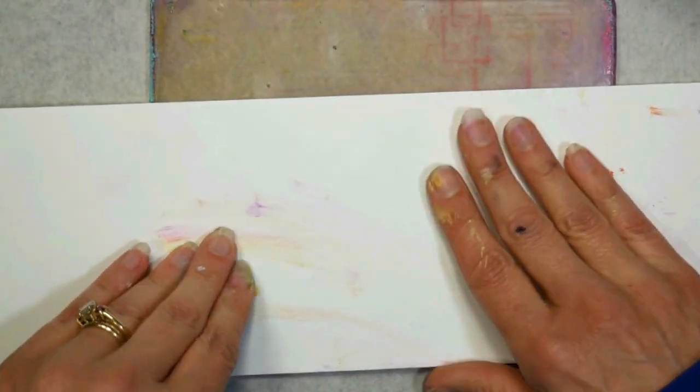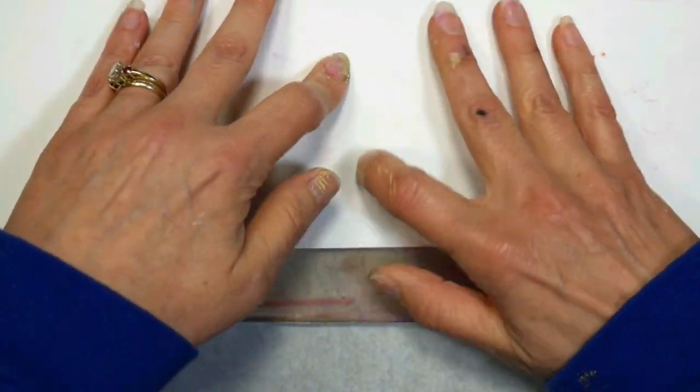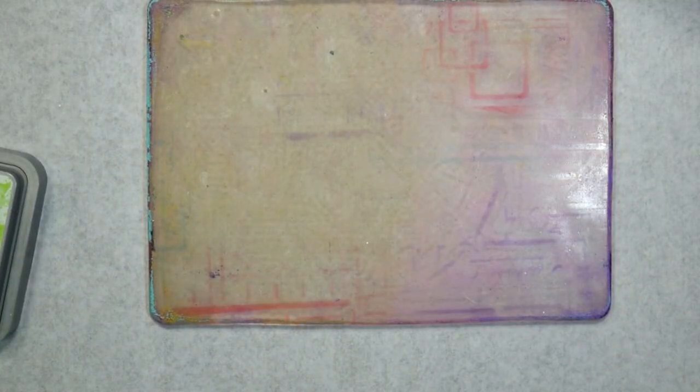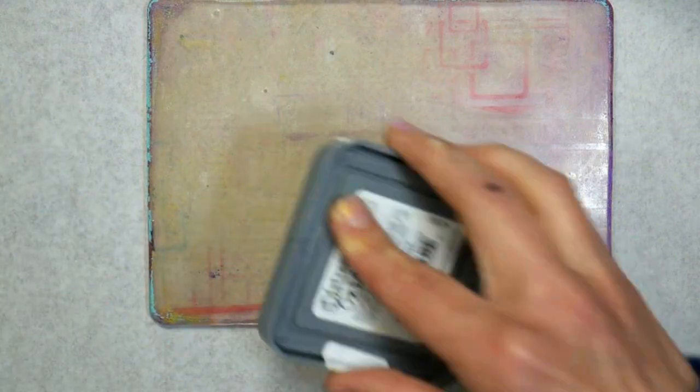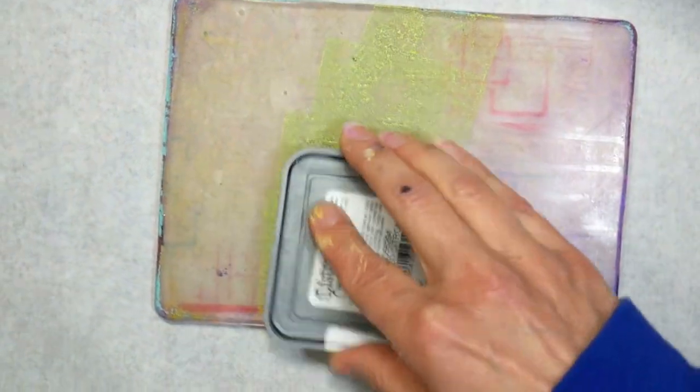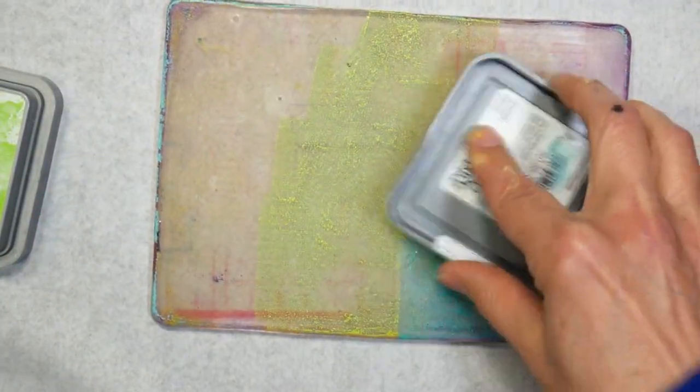With the Distress Oxide inks, I actually got re-inkers for all the pads that I have because I like to use it as paint and I use it a little bit more vigorously than other pads. I don't have to worry about running out and I find it's an excellent use for those pads.